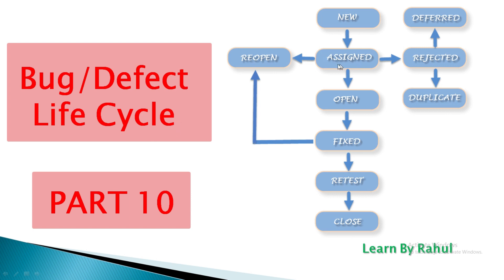Then the third status is OPEN. The developer starts analyzing and works on the defect fix. Next is FIXED. When a developer makes the necessary code changes and verifies the change, they can mark the bug status as FIXED.